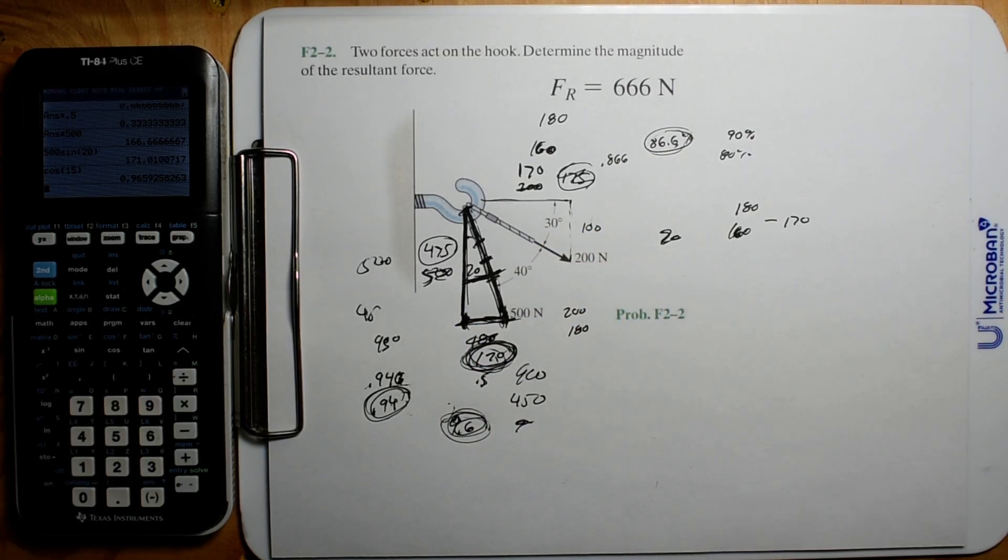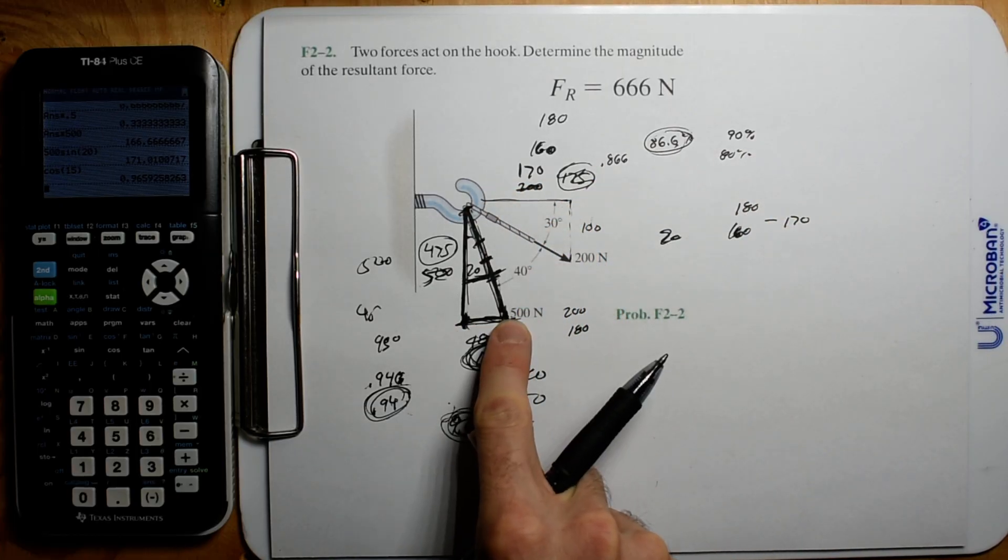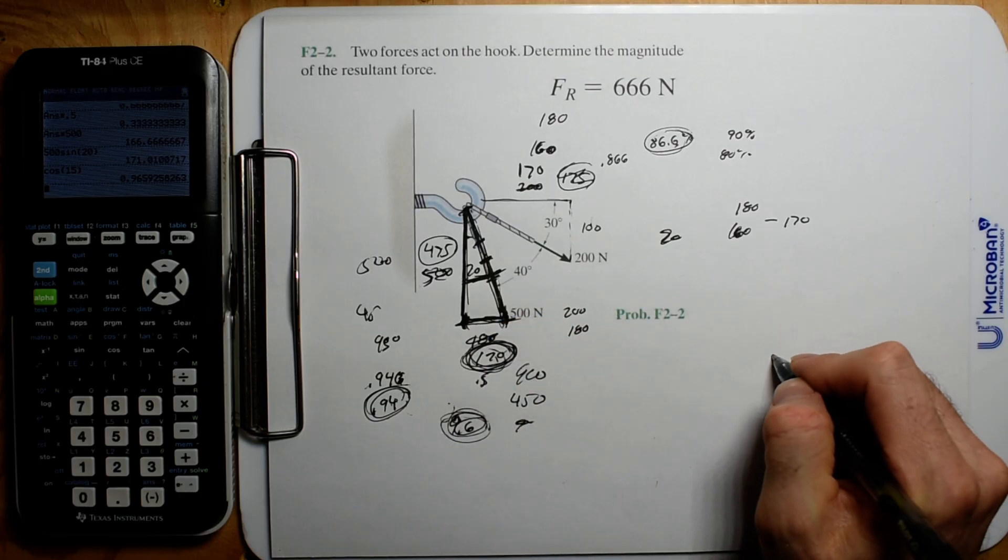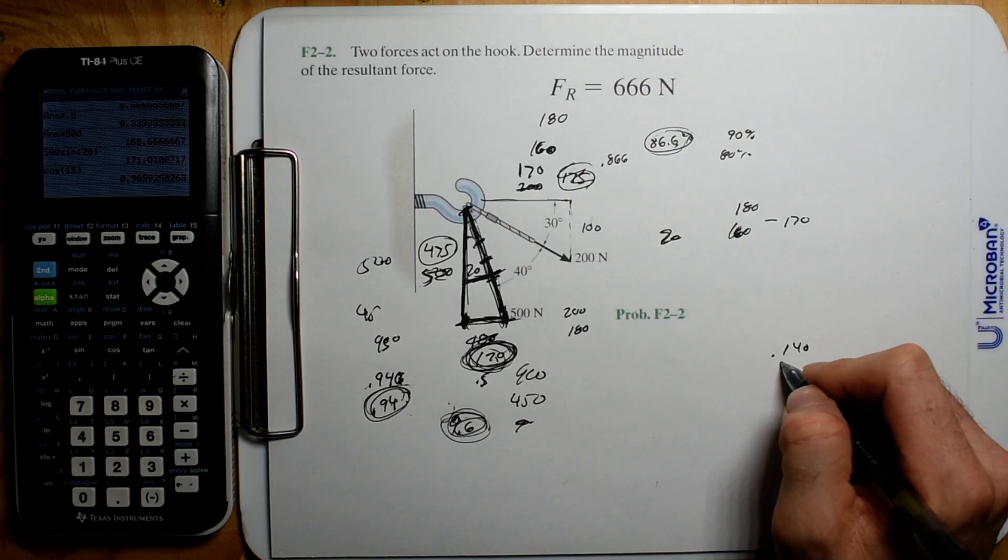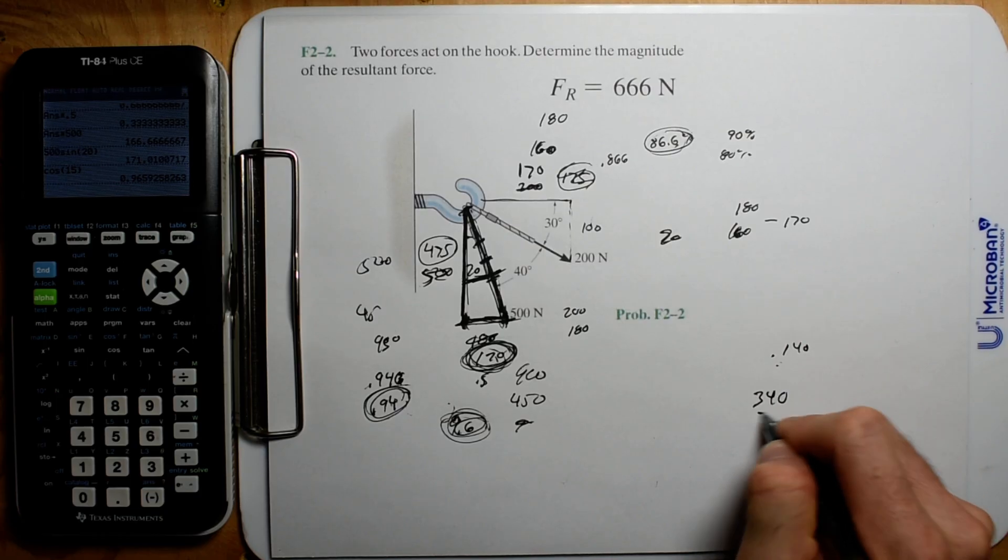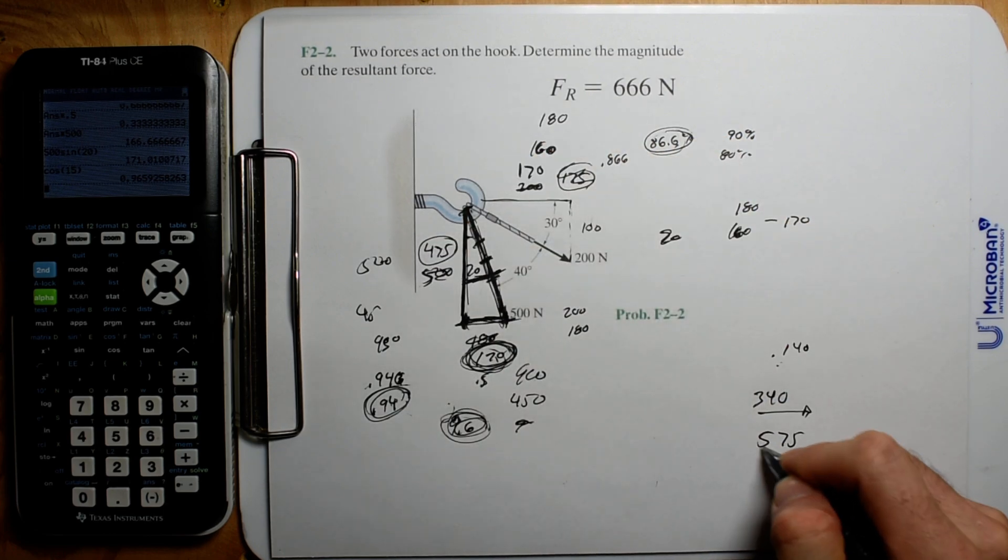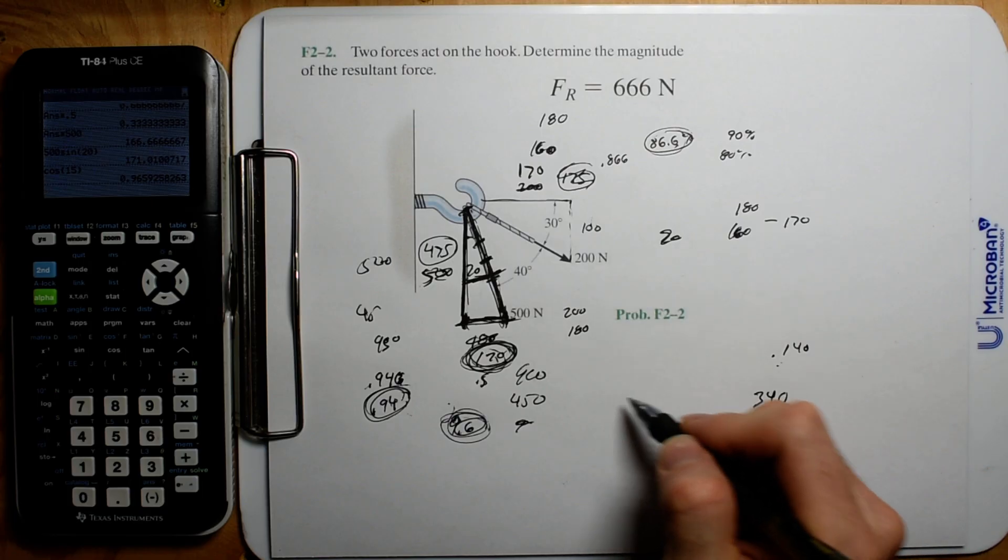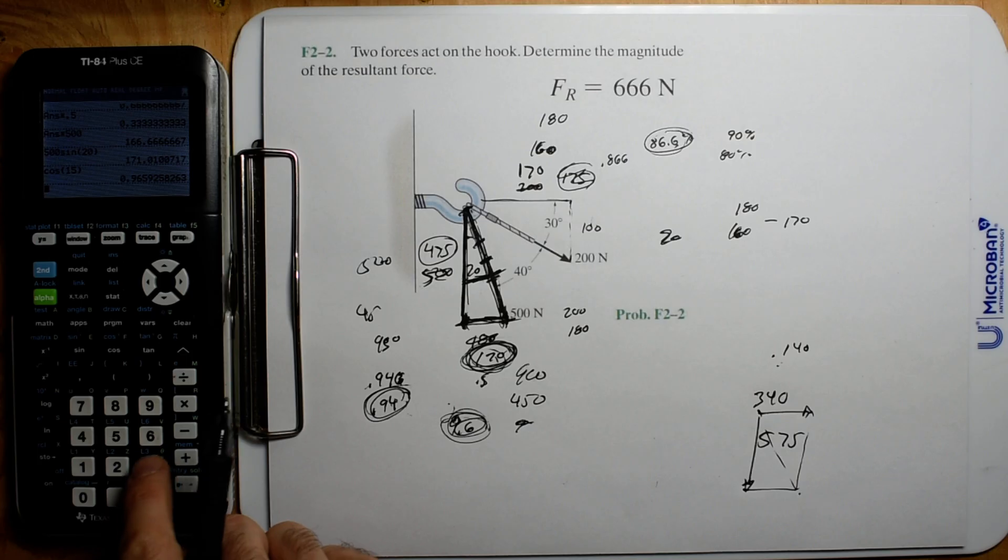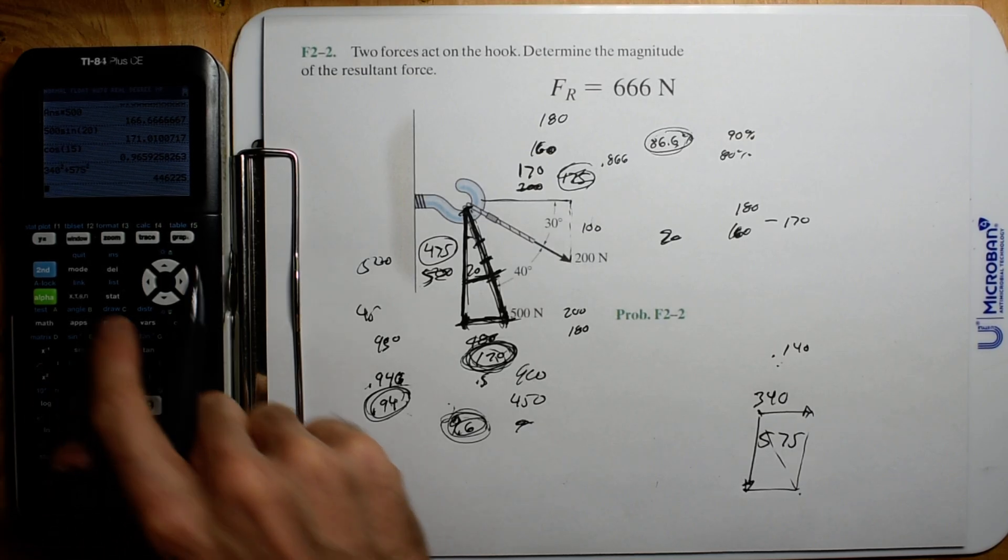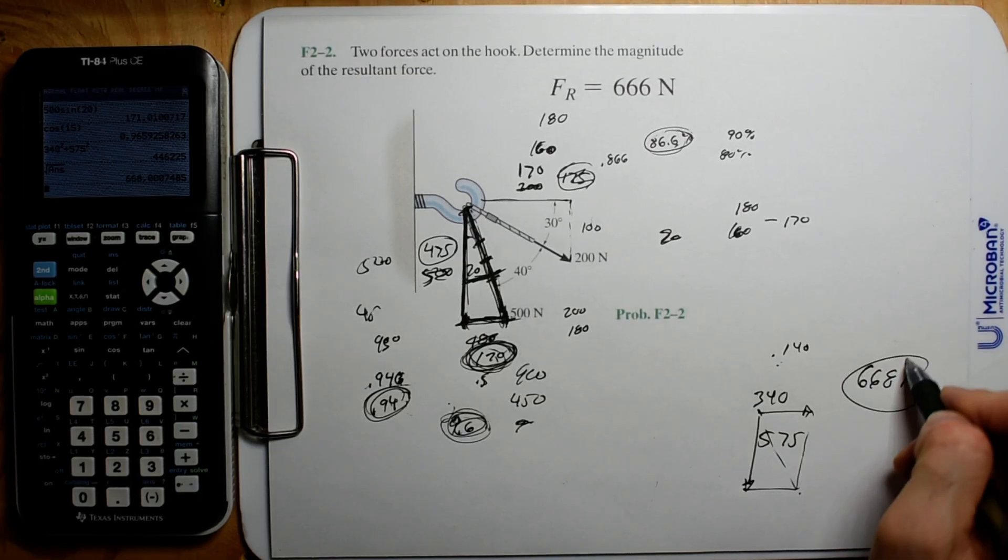This method still gives you a component, so we're gonna have 170 this way and 170 that way. So we're gonna have, that's 340. So we're gonna have 340 that way, and then in the down direction we're gonna have 100, we're gonna have 575. And then you have to use Pythagorean's theorem. The resultant is gonna be 340 squared plus 575 squared, square root that, and we get 668 newtons. So hell yeah, so we get definitely...